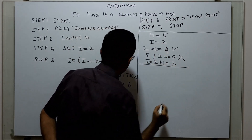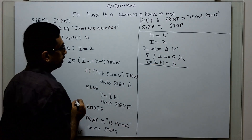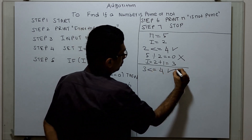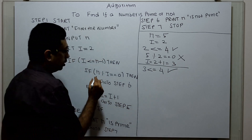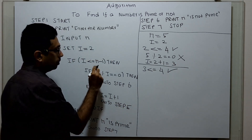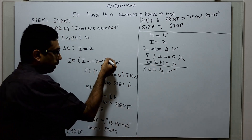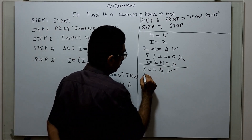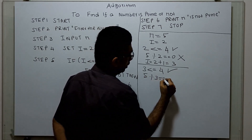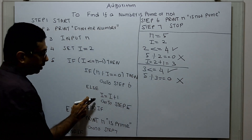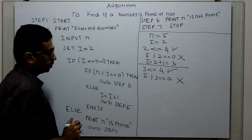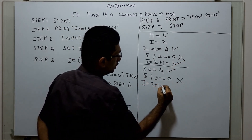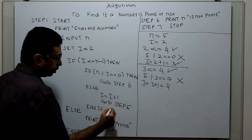Second iteration: check i less than or equal to n minus 1 — 3 less than or equal to 4, this condition is true. Check n modulo i: 5 mod 3 equals 0? This is also false. Go to the else part, increment i: i = 3 + 1 = 4. Go to step 5 again for the next iteration.